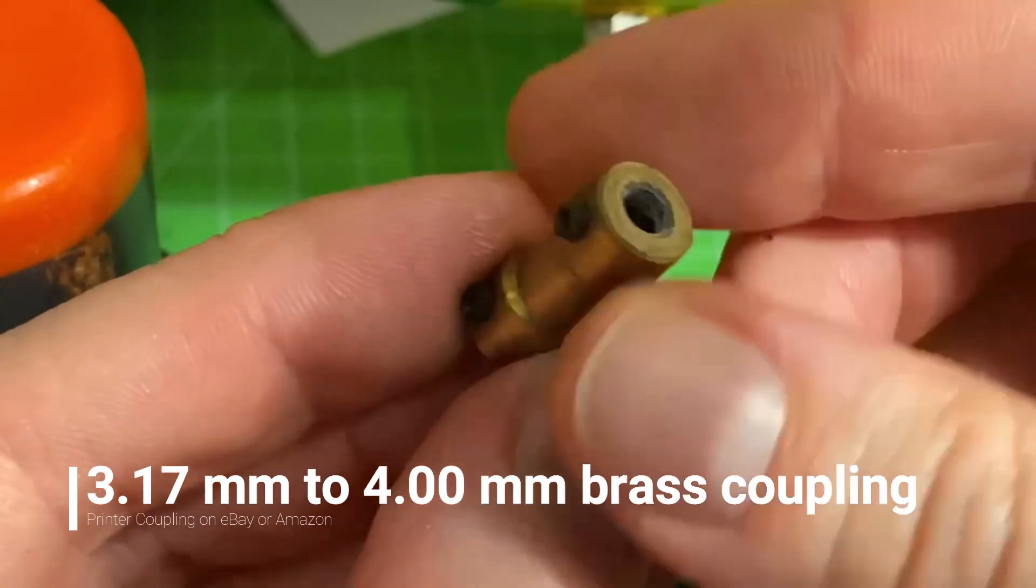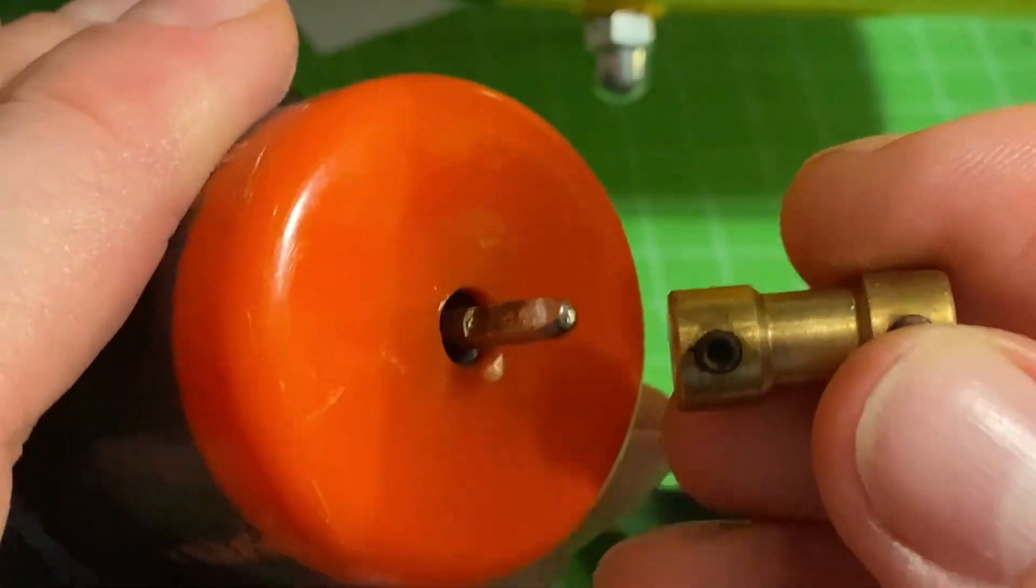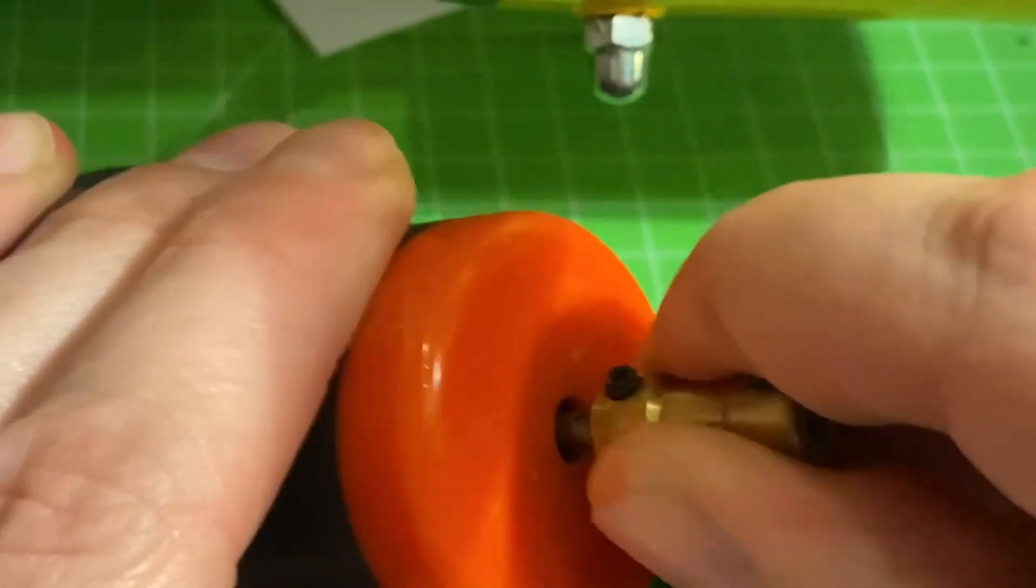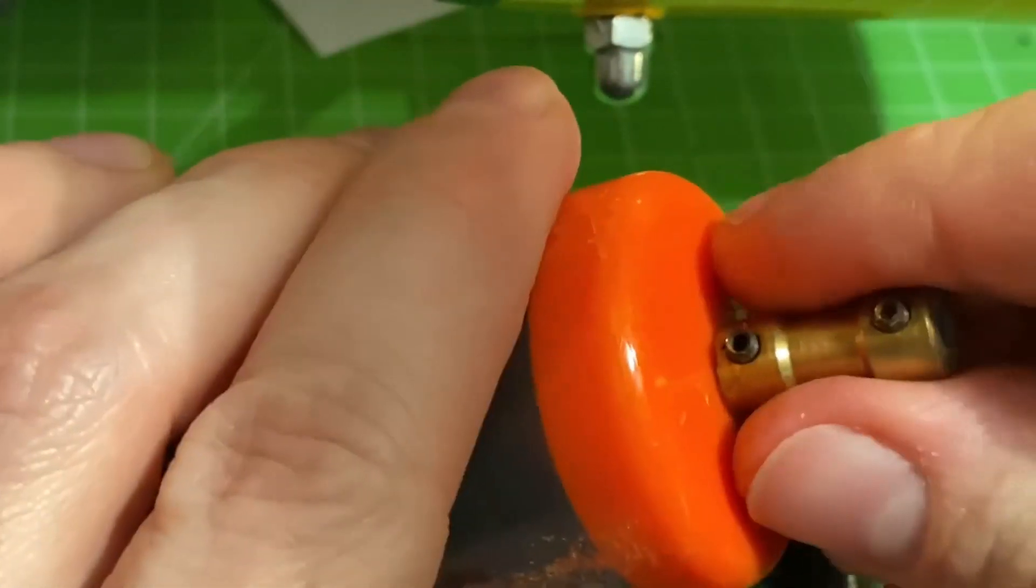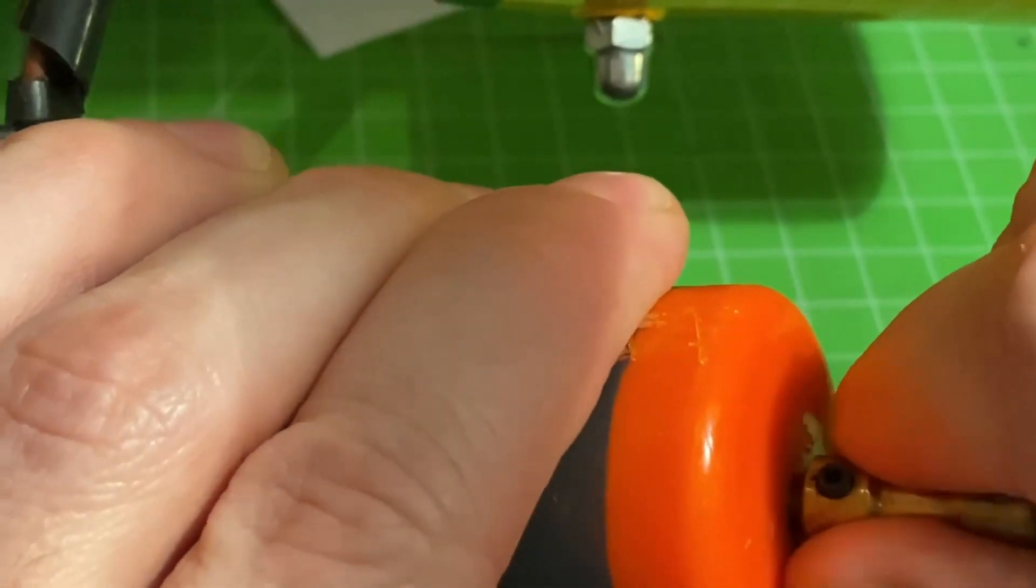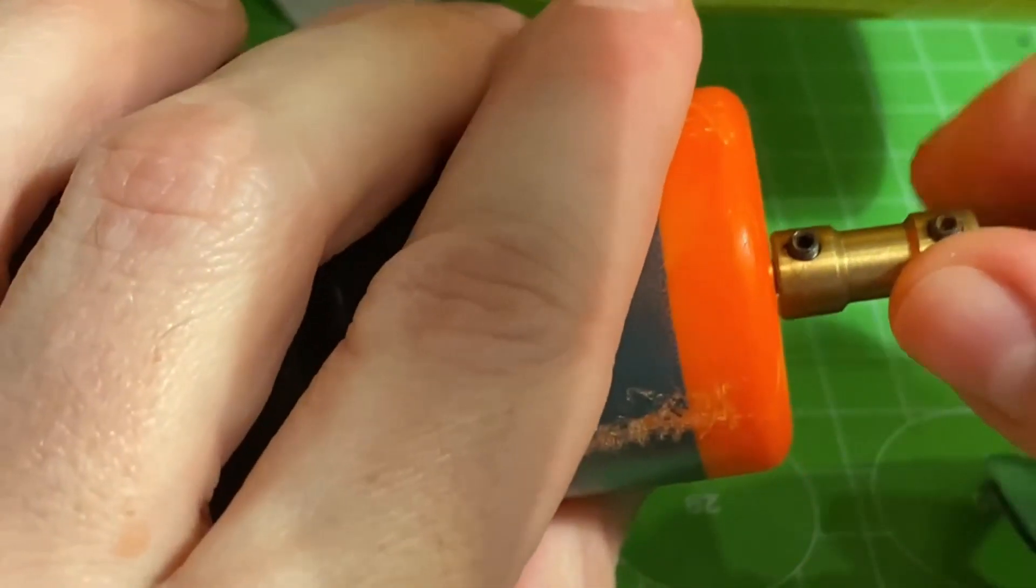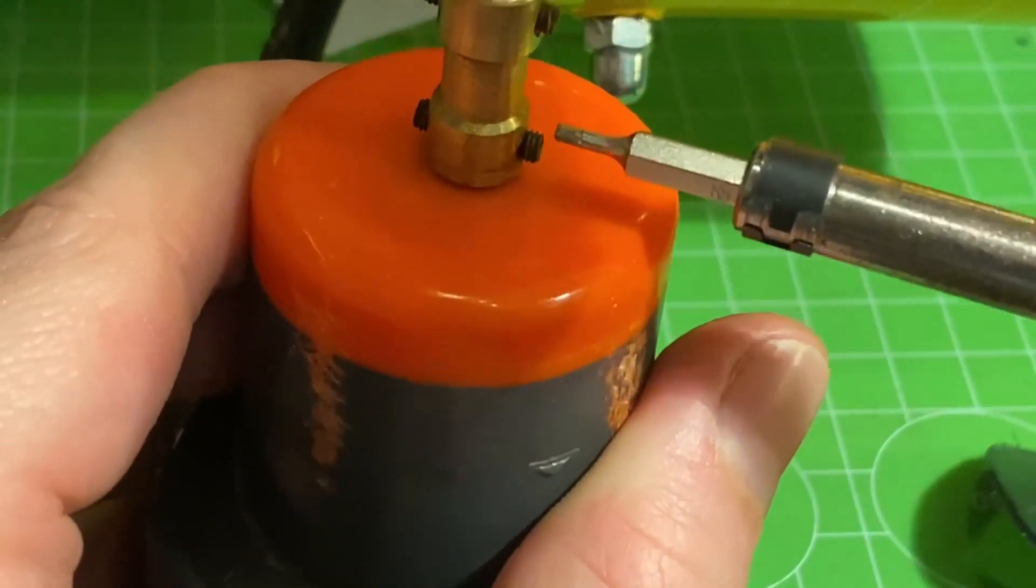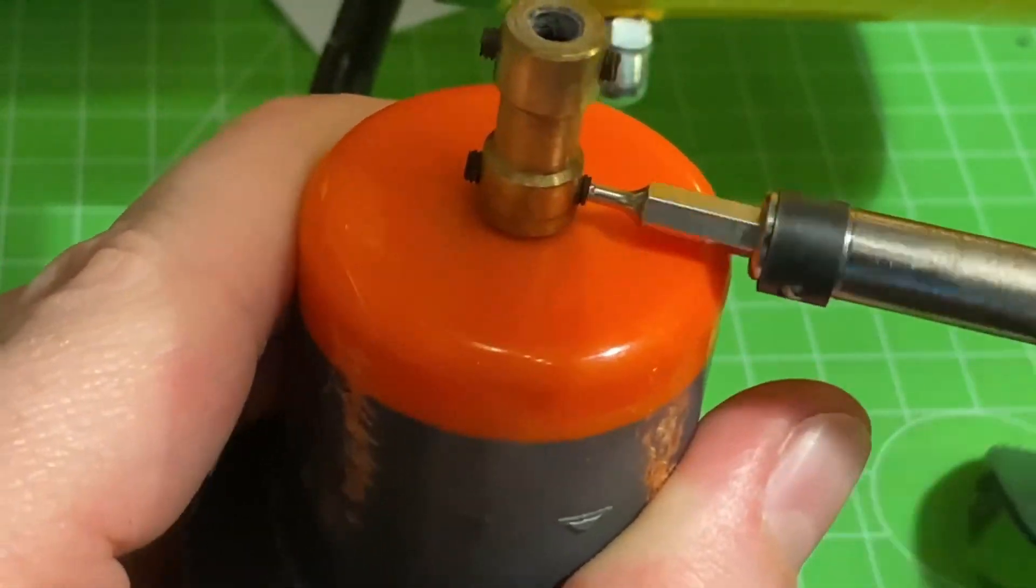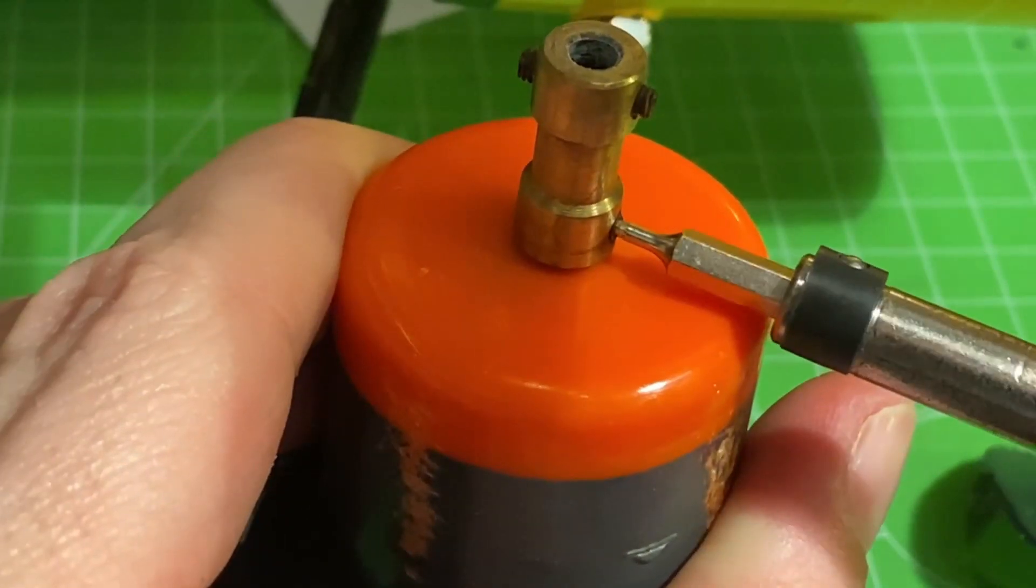Then take a 3.17 to 4 millimeter brass coupling. As far as I know, they go under 3D printer couplings for whatever reason. Pop that on your 3.17 drive shaft of the engine and just make sure you don't press it all the way down because that's going to induce some friction between the coupling and the housing. Just keep that in mind and screw it on with the pre-installed screws which come with the coupling.